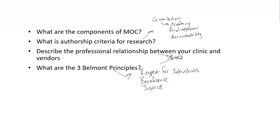Those are just four of the random things they can ask about in ethics. It's actually the toughest category to study for because you just don't know what they're going to bring up. It's hard to recommend exactly what to study since it's so random, but try to cover a lot of information. Some of it is common sense; other things like the Belmont principles are pure memorization. If you have any questions, comment below — best of luck studying.